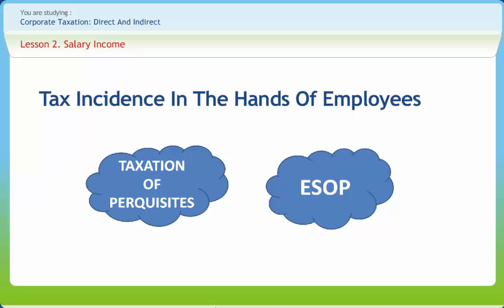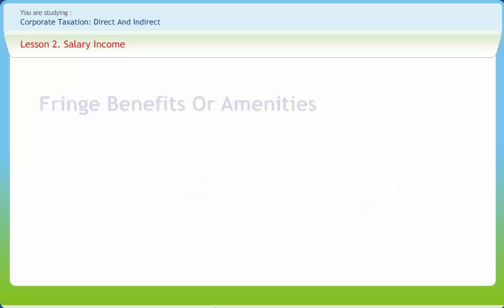Post amendment by the FA 2009, with effect from 1 April 2009, the aforesaid benefit is now taxable in the hands of the employees at the stage of exercise of options or allotment of shares. The taxable value of the benefit is equal to the FMV of the said shares or securities as on the date of exercise of options or allotment of shares, as reduced by any amount paid by or recovered from the employee. In other words, while the timing of taxation and the method of calculation of FMV remains the same, the calculation date of FMV has shifted from vesting to exercise.